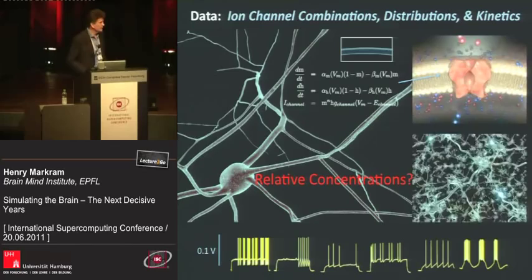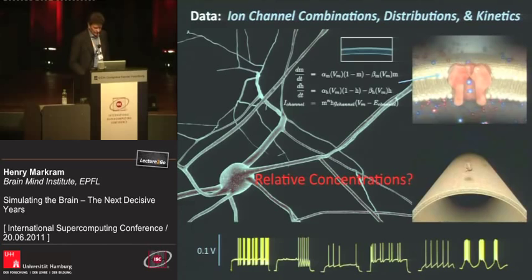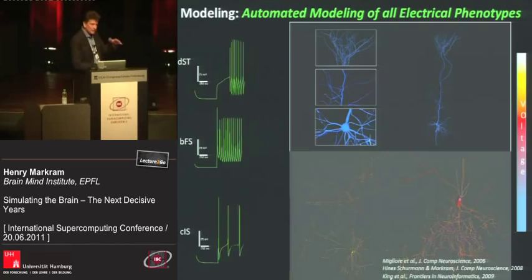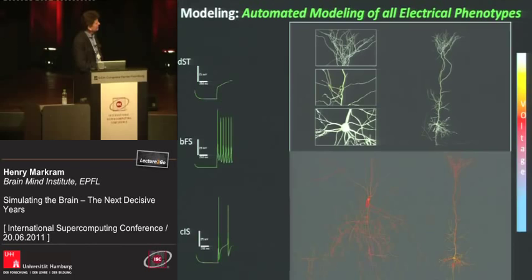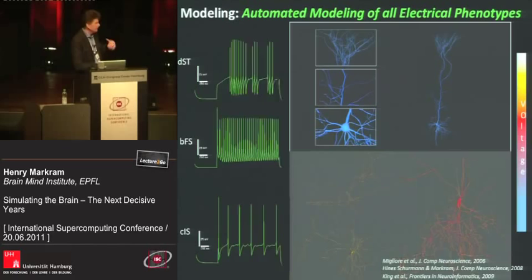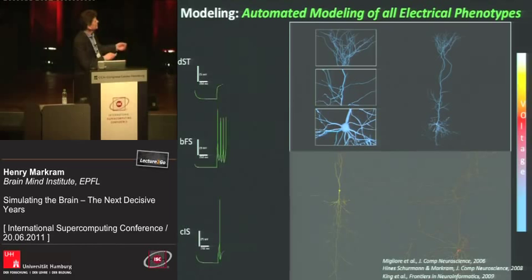The color code is voltage. When a cell is quiet, it's sitting at about minus 70 millivolts, and it collects some inputs. It rises to about minus 40 millivolts, and then it produces this spike of activity. So it's technically possible to create model neurons that are capturing and behaving almost the same as biological neurons.